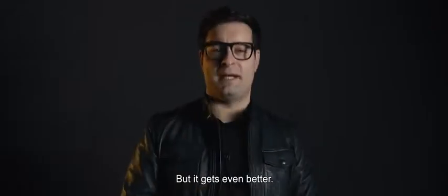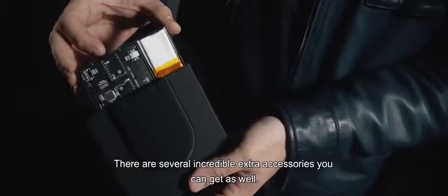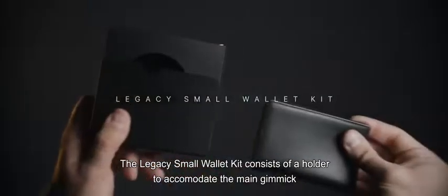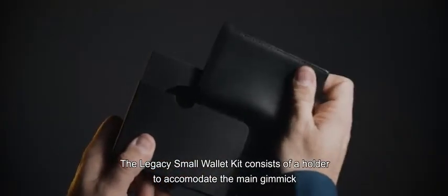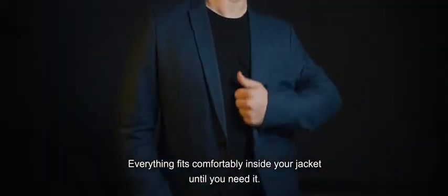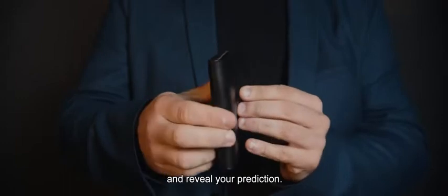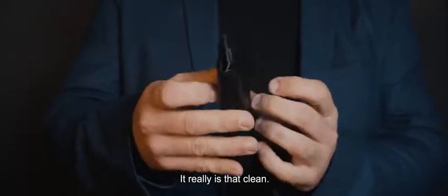But it gets even better. There are several incredible extra accessories you can get as well. The Legacy Small Wallet Kit consists of a holder to accommodate the main gimmick and a small leather wallet. Everything fits comfortably inside your jacket until you need it. In a moment's notice, you remove the wallet from your pocket and reveal your prediction. It really is that clean.